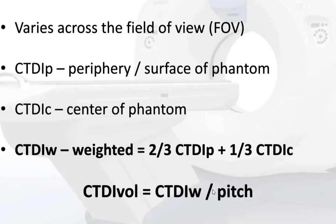CTDI-W, or weighted, varies across the field of view. It factors the dose at the periphery of the body and the dose at the center. The dose at the periphery or skin will be larger than at the center, but CTDI is measured by phantoms. CTDI-W equals two-thirds of CTDI periphery plus one-third CTDI of the center.